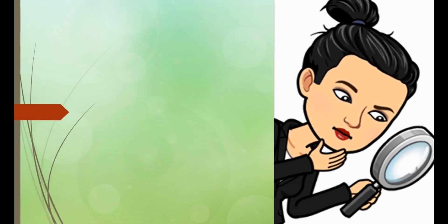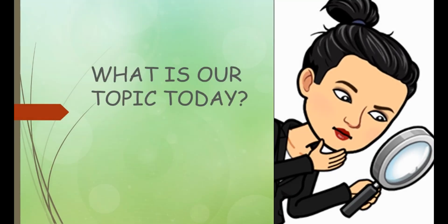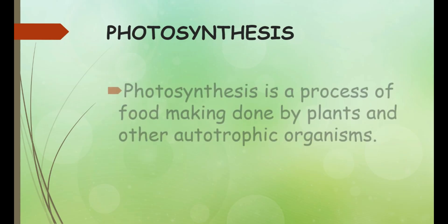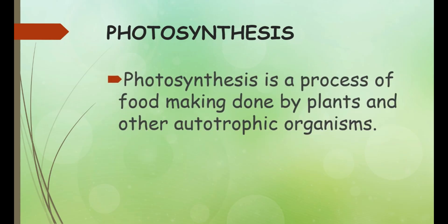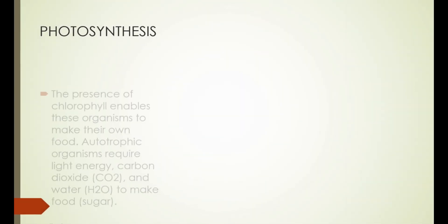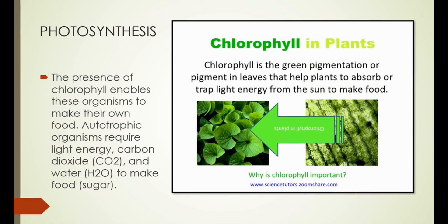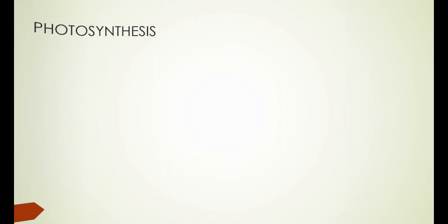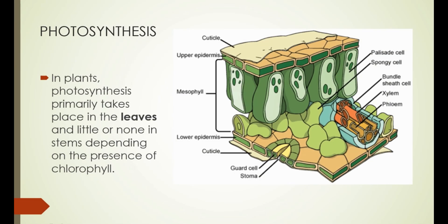So what are we going to be talking about today? That's right — we'll be talking about photosynthesis. Photosynthesis is a process of food making done by plants and other autotrophic organisms. The presence of chlorophyll enables these organisms to make their own food. Autotrophic organisms require light energy, carbon dioxide, and water to make food. In plants, photosynthesis primarily takes place in the leaves, and little or none in the stems, depending on the presence of chlorophyll.